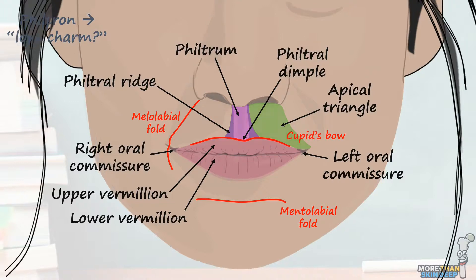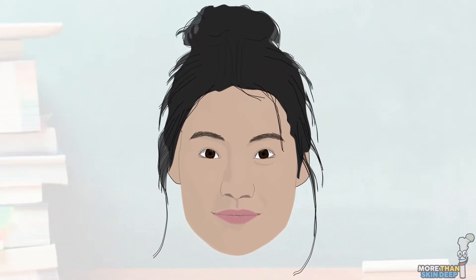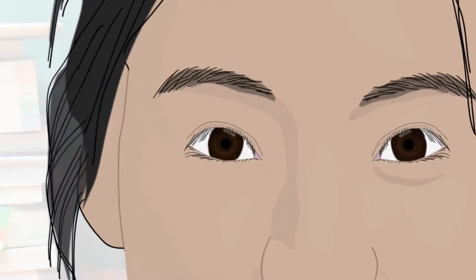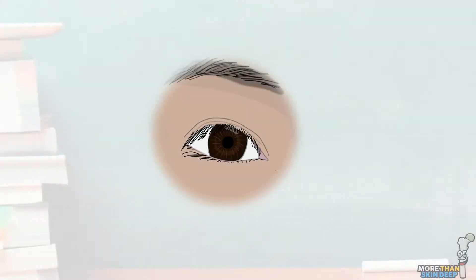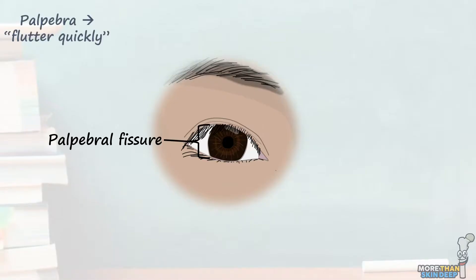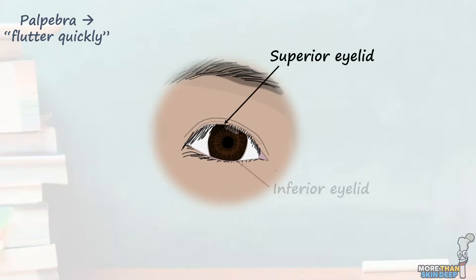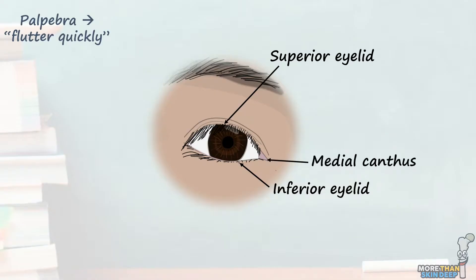The last complex part of the facial anatomy is the eyes, or orbital region. There's a lot of detail we can go into regarding the eyes, but today we're just going to be covering their surface anatomy. We call the opening between the eyelids the palpebral fissure, where palpebra comes from the Latin word meaning to flutter quickly. Clearly bordering this, we have the superior and inferior eyelids. Medially, we have the medial canthus, or medial palpebral commissure, and laterally, we have the lateral canthus, or lateral palpebral commissure.